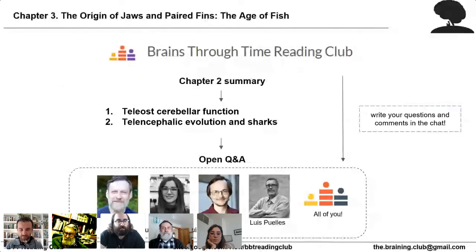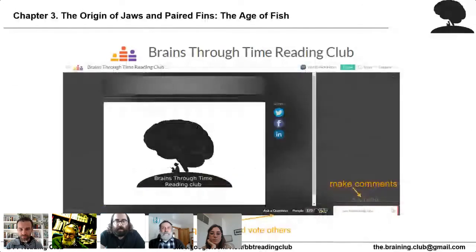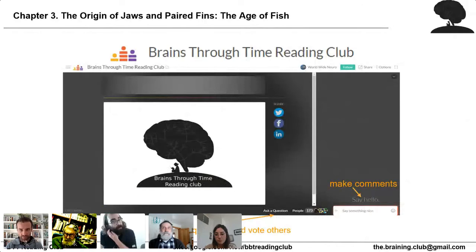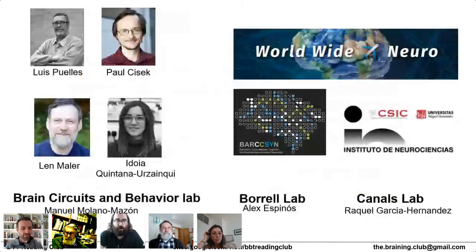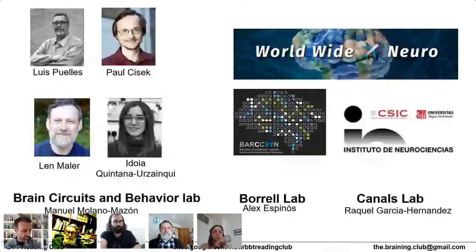We will start with a short chapter summary by Raquel García, followed by two discussion blocks. In each block our panelists will highlight some important or controversial aspect of the chapter. Len is going to talk about cerebellar function in teleosts and Idoya is going to talk about what sharks can teach us about telencephalic evolution. Finally we will have an open Q&A. If you want to participate you can use the ask-a-question button at the bottom of the screen.